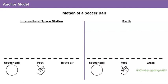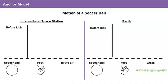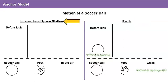Now that we know all of the components in each system, let's look at the kick itself. We'll begin with what happens before the kick. What is happening with the ball in each system before the ball is kicked? On earth, the ball rests on the grass, so let's add the grass and the ball to the before-kick section of our model. But what happens before a kick in space? On the international space station, the ball just floats in the air, so in our international space station model, we can draw the ball in the air.